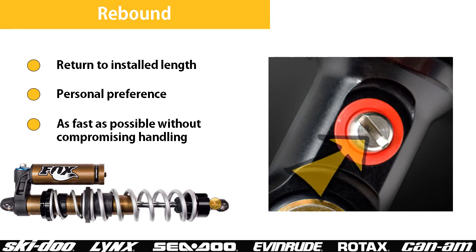Rebound damping controls the rate at which the spring returns to its installed length after it has been compressed. The proper rebound setting is a personal preference and changes with rider weight, riding style, and conditions. A rule of thumb is that rebound should be as fast as possible without allowing the spring to kick back and cause the vehicle to lose contact with the ground.